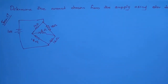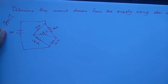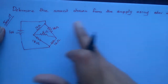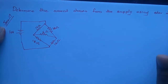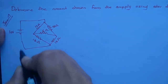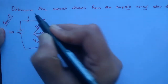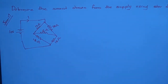Good morning. Today we are going to do a problem that was a previous year university question asked in June 2017 for K2 examination: determine the current drawn from the supply using star-delta transformation. So the current drawn from the supply, marking it as I, we have to calculate this.